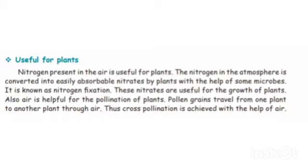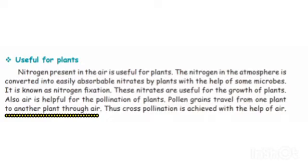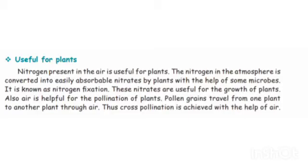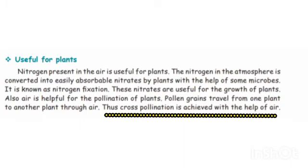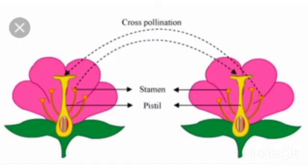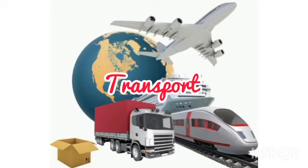Pollen grains travel from one plant to another plant through the air. Grass pollination is achieved with the help of air.